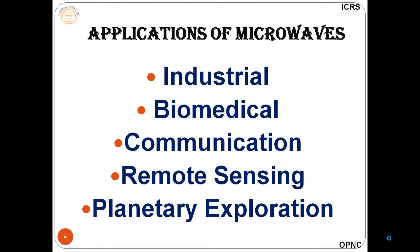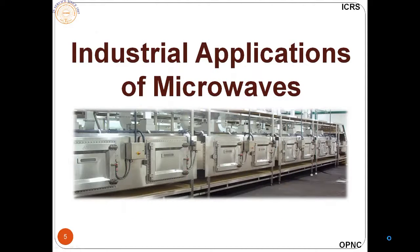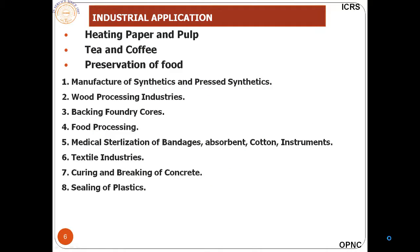In industrial applications, we use microwaves for heating: paper and pulp, tea leaves and coffee sheets, preservation of food, manufacturing of synthetics, wood processing, baking, and foundry cores. Microwaves are used as heaters for curing and breaking concrete and sealing plastics. We also use microwaves for measuring the thickness of metal sheets, rolling mills and wire diameter, thickness of dielectric sheets, and monitoring moisture content in paper, textile, and liquids.